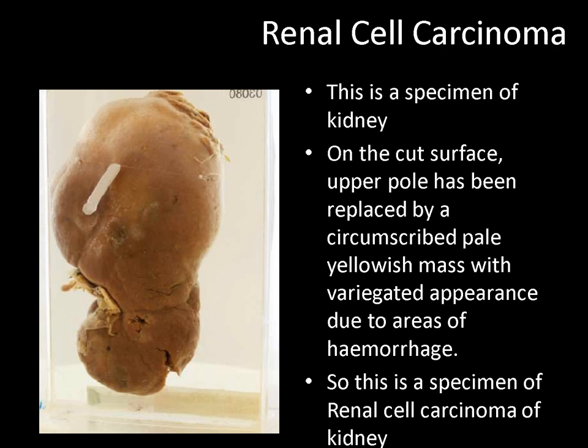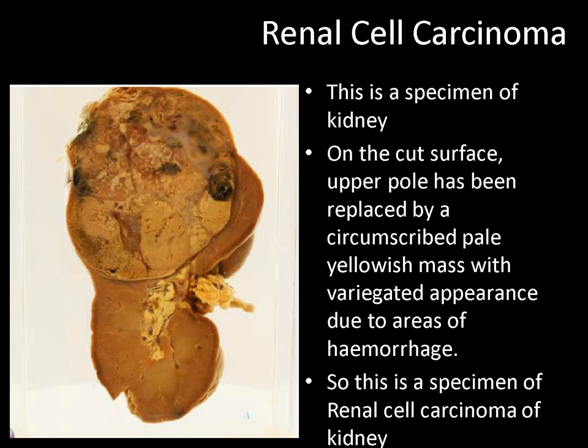This is a specimen of kidney — I call it kidney because of the bean-shaped organ and the presence of a hilum. On the cut surface, the upper pole has been replaced by a circumscribed pale yellowish mass with variegated appearance and there are areas of hemorrhage. I call this specimen as renal cell carcinoma, and this is a nephrectomy specimen because the entire kidney is seen.